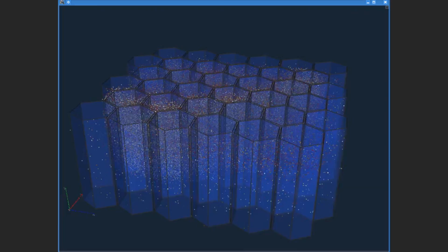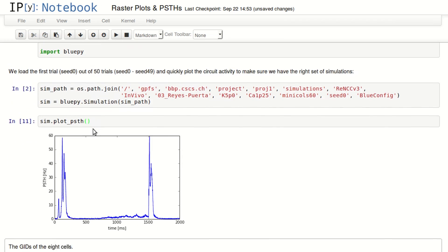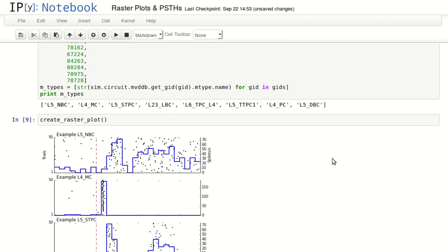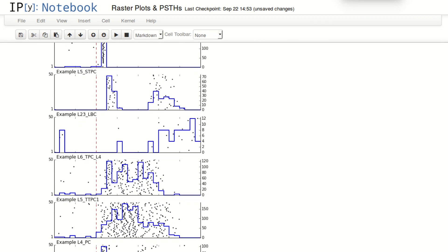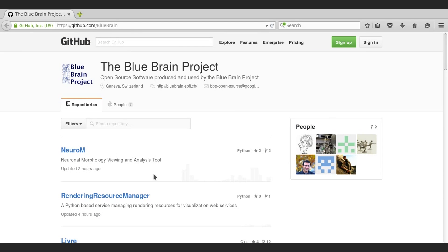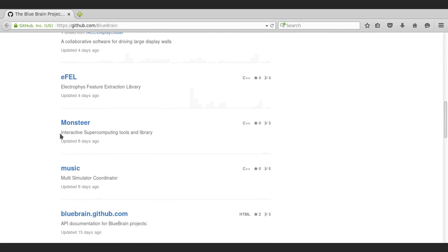In order to do the reconstruction, the simulation of the microcircuit, we had to develop an entire ecosystem of more than 30 software tools. These software tools allow you, for example, to curate individual cell morphologies, to create cell models, to set up simulations, run these simulations, and then analyze them. We intend to share these software tools progressively with the community.